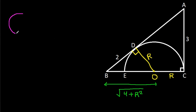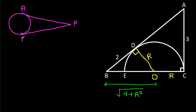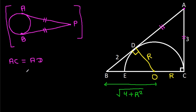Now, in any circle, from any external point, if we draw two tangents to the circle — suppose the point is A, and the tangent points are B and C — then the two tangent lengths are equal. So from point A, AC will be equal to AD. Since AC is 3, AD will also be 3.